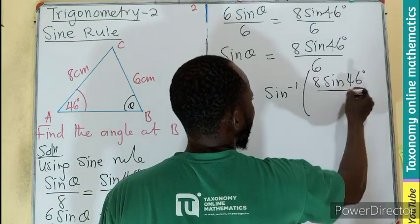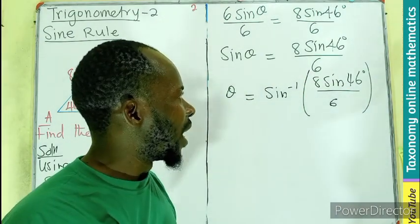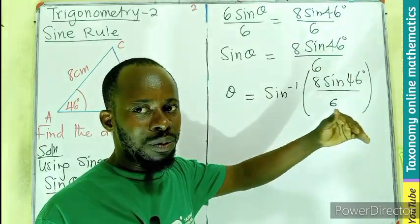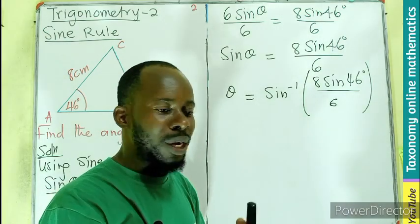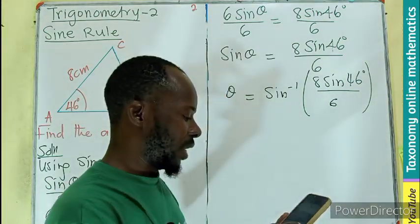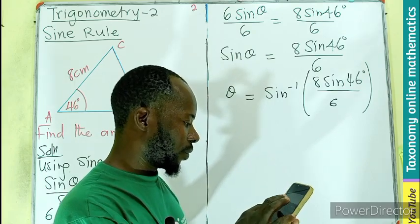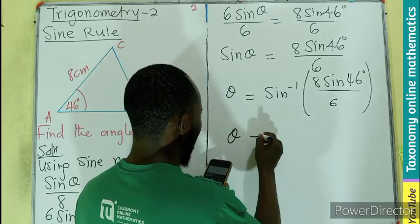We are looking for theta, so theta will equal the sine inverse of 8 sine 46 degrees divided by 6. Let's put all into the calculator to avoid truncating with decimal places. Let's use all the values as they will be in the sine inverse.